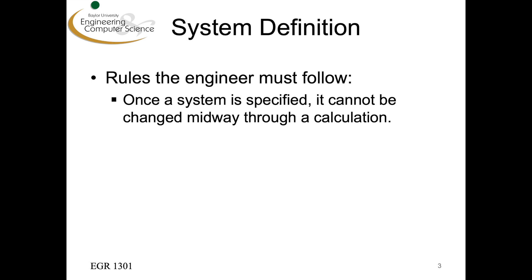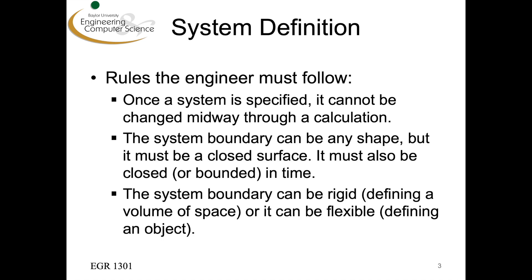You define a system, and once you define it, you can't change it — otherwise you'll get wrong answers. The system boundary can be any shape, but it must be closed — it must have some kind of bound to it. The system boundary can be rigid, defining a fixed volume of space, or it can be flexible where it's around an object and the object can move.